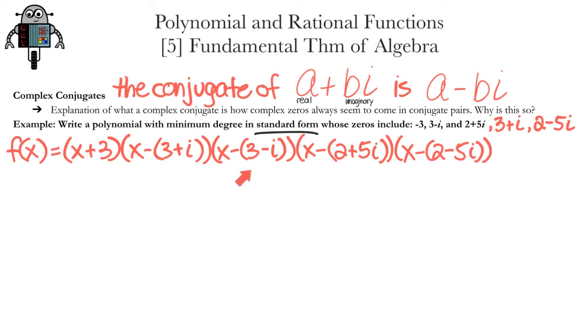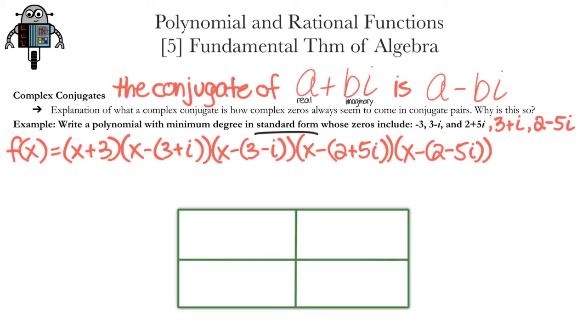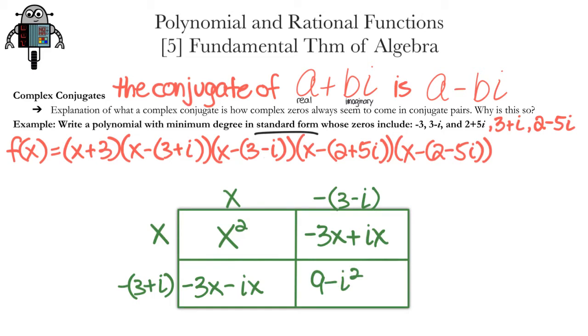The best approach is to multiply the factors that are conjugates of each other first. Let's start with 3 + i and 3 - i. I like to set up a Punnett square to multiply these two factors together. We'll simply multiply the terms together. x times x is x squared. For the top right, we have negative 3 times x plus, negative times negative, ix. For the bottom left, we have negative 3x minus ix. For the bottom right, the negatives multiply to a positive. Then we have a difference of two squares. 3 times 3 is 9. Negative i times i is negative i squared.